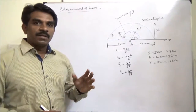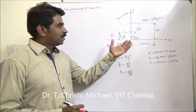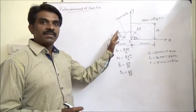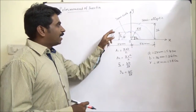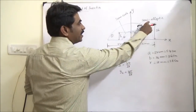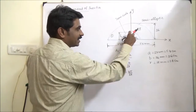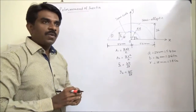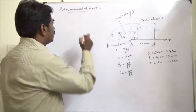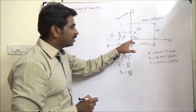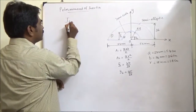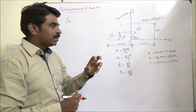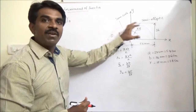Hi everybody. Now we are going to understand polar moment of inertia using a problem. We have a cross section where the outer one is semi-elliptic. The inner cutout portion is removed — this portion is a semi-circle. The question is: we have to find the polar moment of inertia about point O, and also we have to find the polar moment of inertia about the centroid of this cross section.